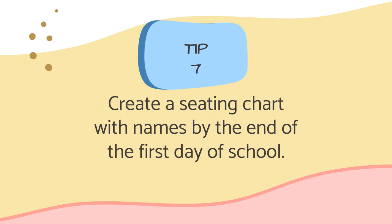Tip number seven: Create a seating chart with names by the end of the first day of school. Creating a seating chart will help you learn names faster and keep track of where students are supposed to be seated daily. You can sketch a chart by hand, create one using PowerPoint, or use grading software that allows you to create a chart via the program.